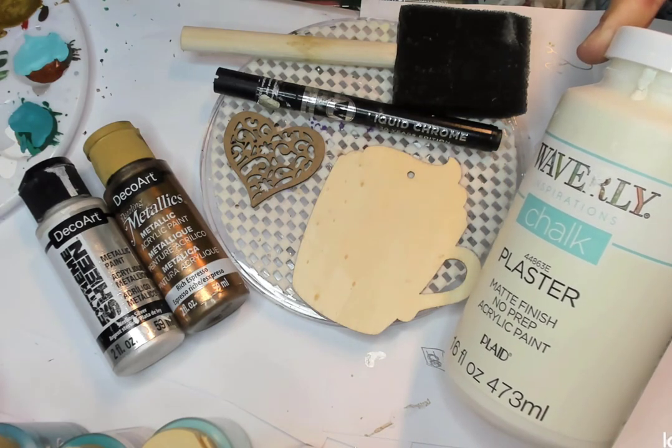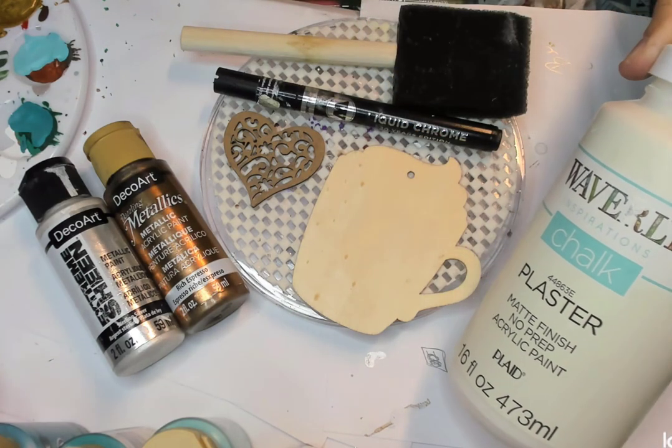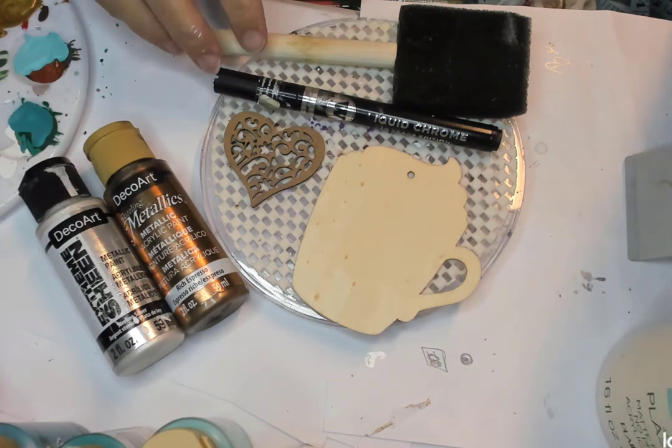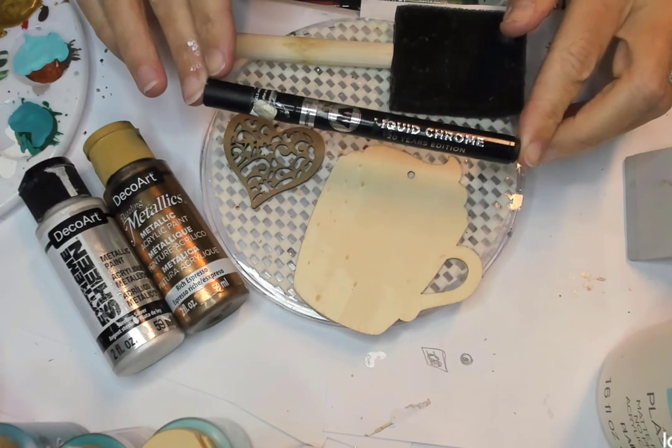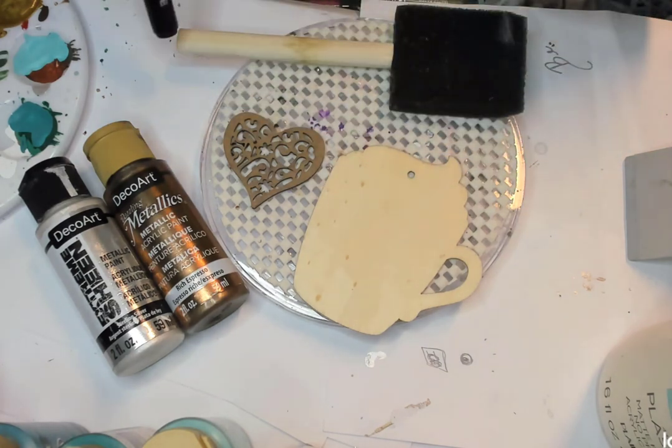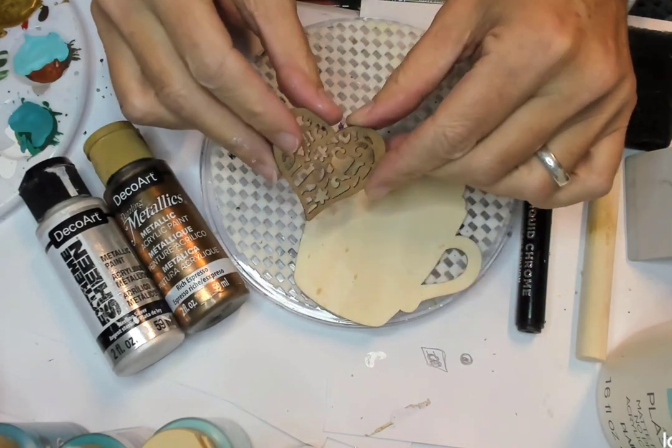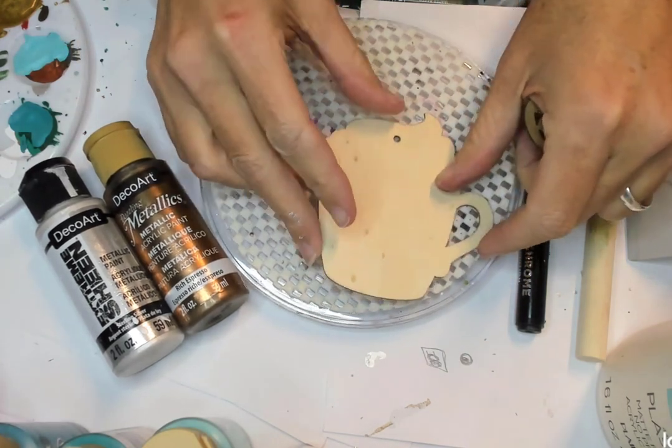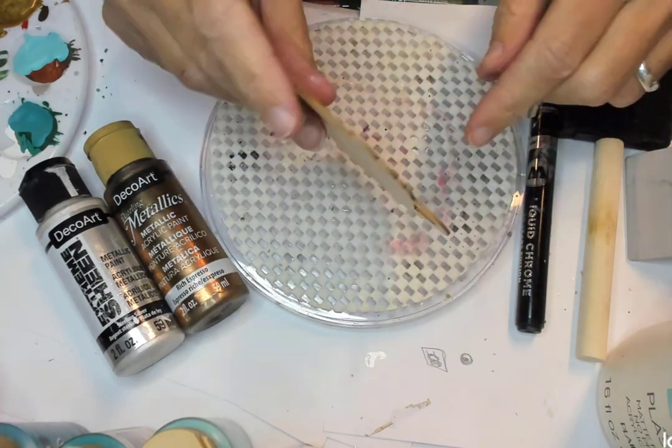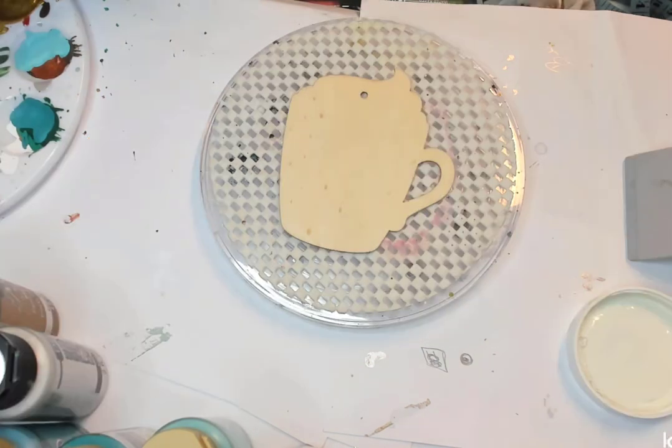I'm going to use a couple of things. We have some Waverly chalk paint. You could use any white chalk paint or any color for that matter if you want a different mug color. I'm going to put it on with a sponge brush. I have some Molotov liquid chrome marker pen. Here are my things from the Dollar Tree, this laser cut little heart. They have lots of embellishments. This is just the MDF flat piece of wood cut out in the shape of a mug. And then a couple of colors here, the Espresso and Sterling Silver from DecoArt.